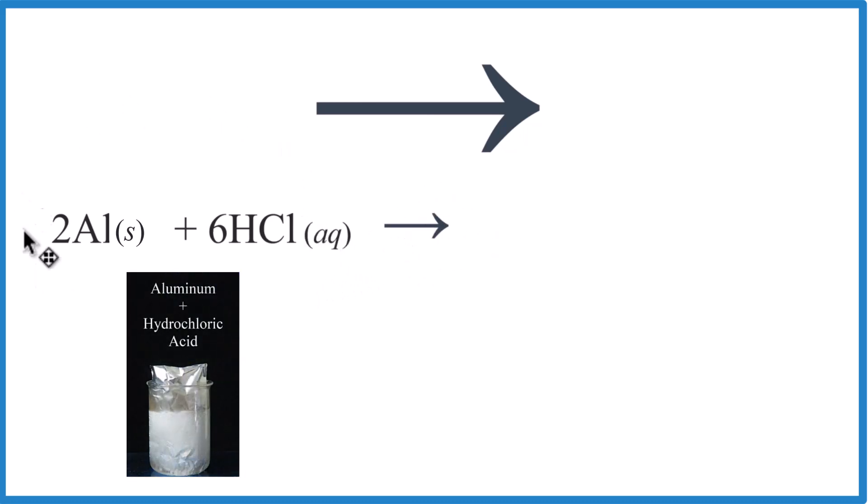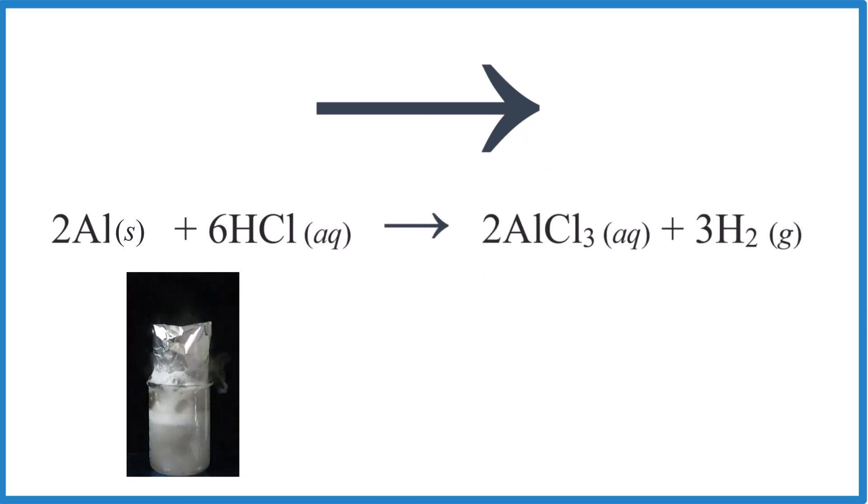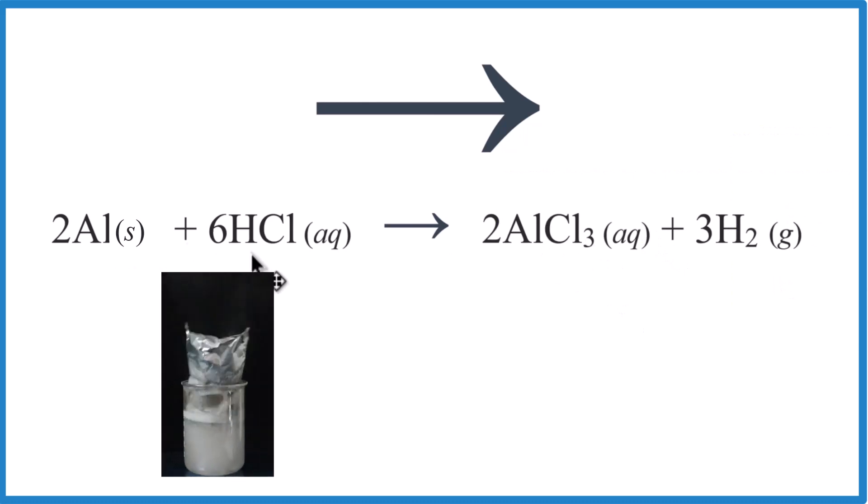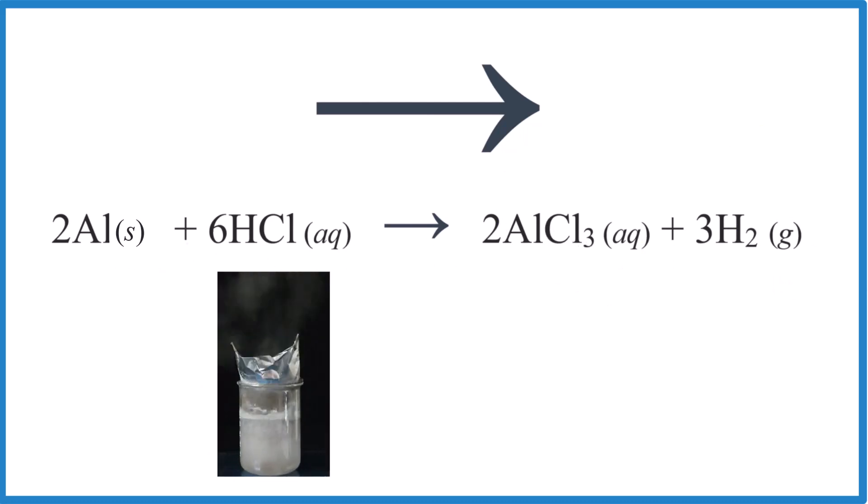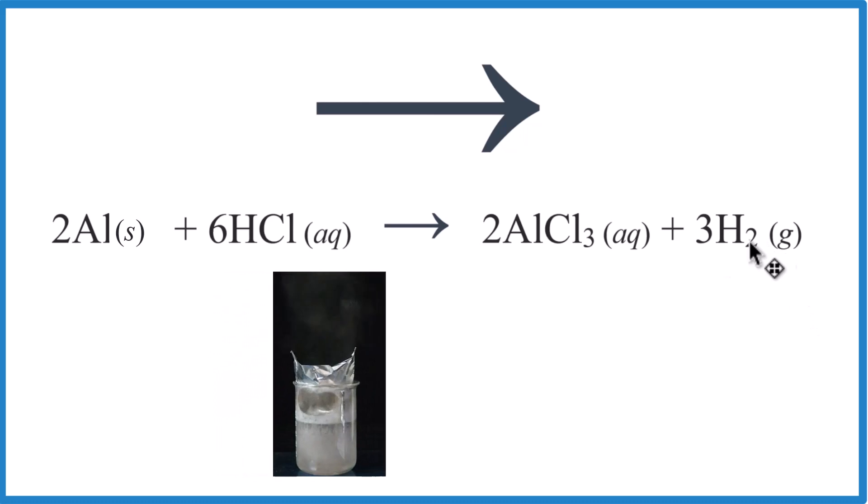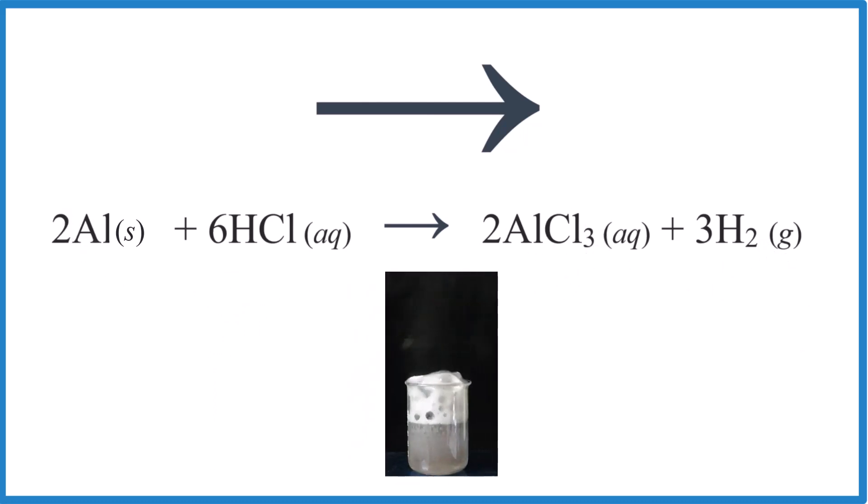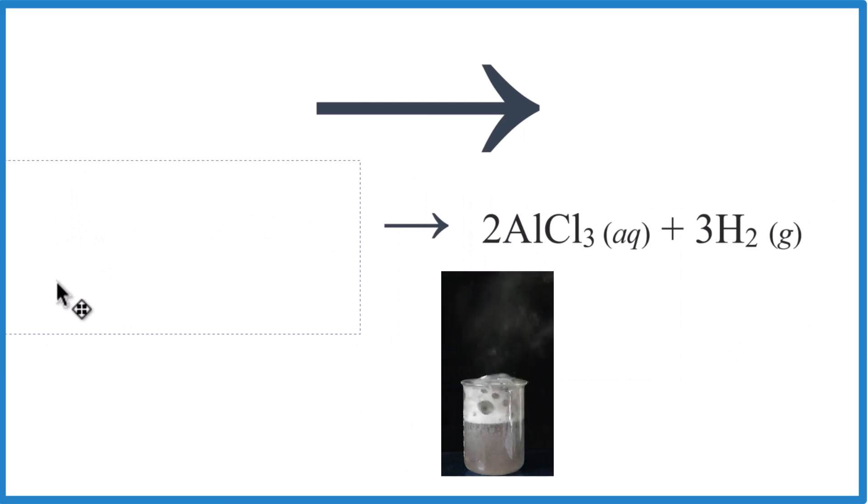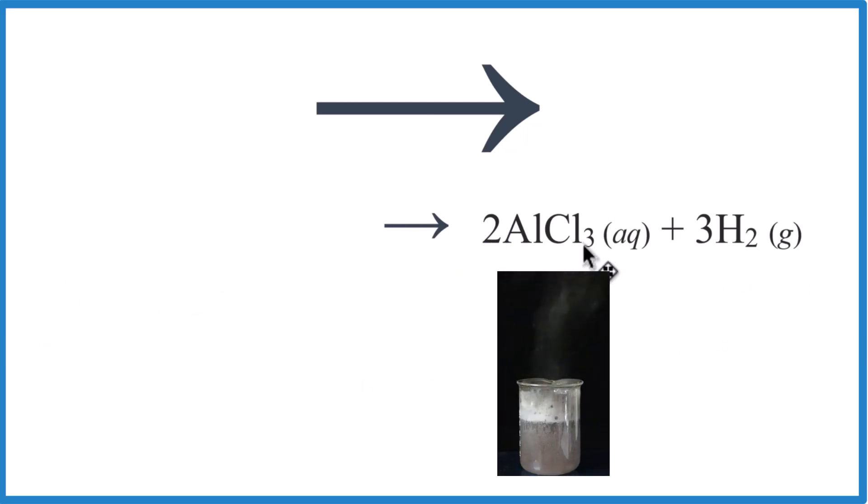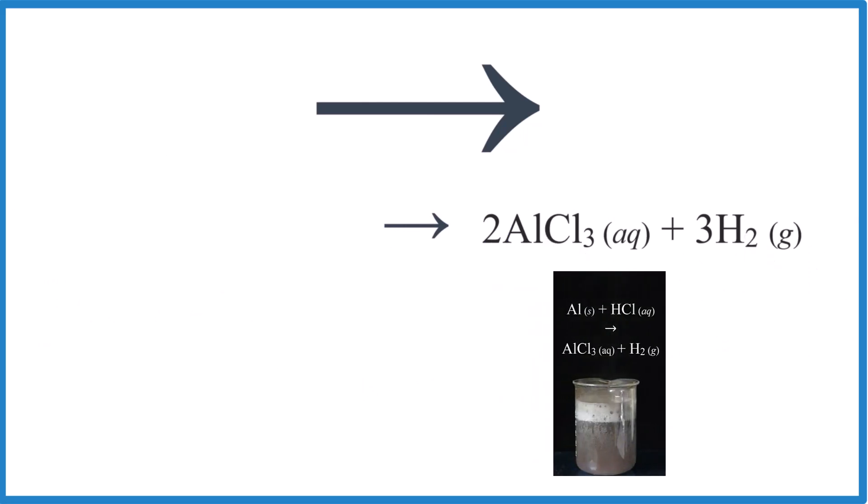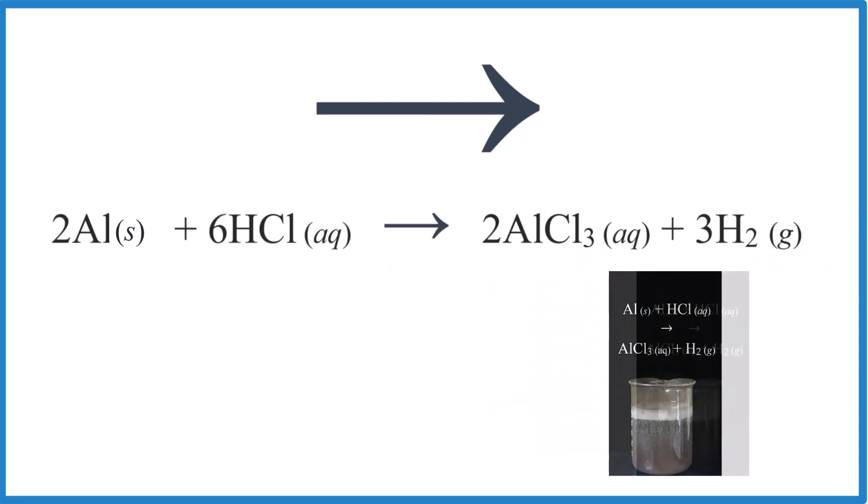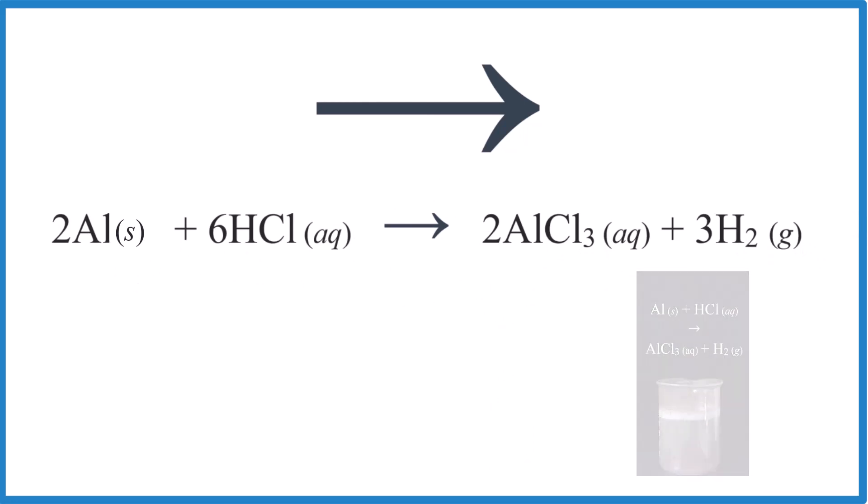Now the arrow means something because these reactants are changing into products. You can see the bubbles—that's the hydrogen—and we have aluminum chloride in the solution. This is disappearing, it's going away. Eventually all we have are the products. So the arrow tells us that this reaction has taken place and it's an irreversible reaction.